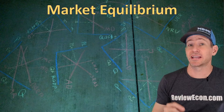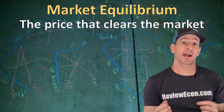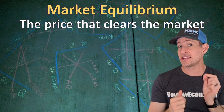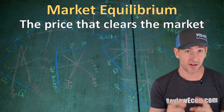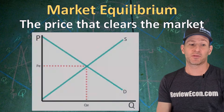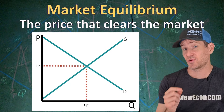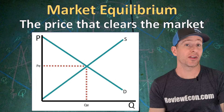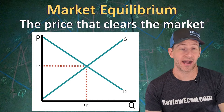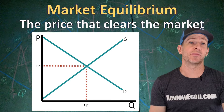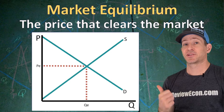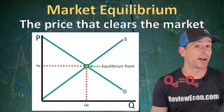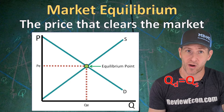First, we're going to talk about market equilibrium. The equilibrium price is the price that clears the market — that means the number of people wanting to buy equals the number of people willing to sell at that particular price. We find market equilibrium at the intersection between the supply and demand curves. At that intersection, we find our equilibrium price on the y-axis and the equilibrium quantity on the x-axis.